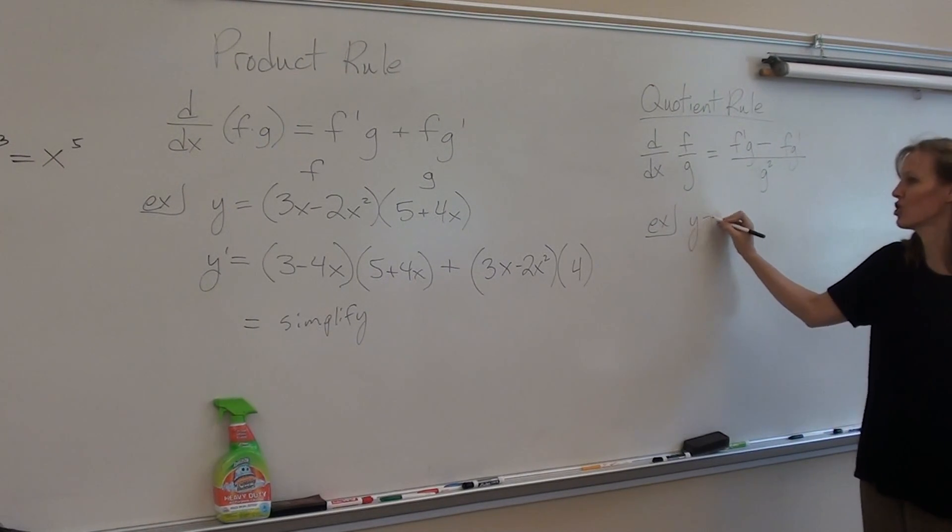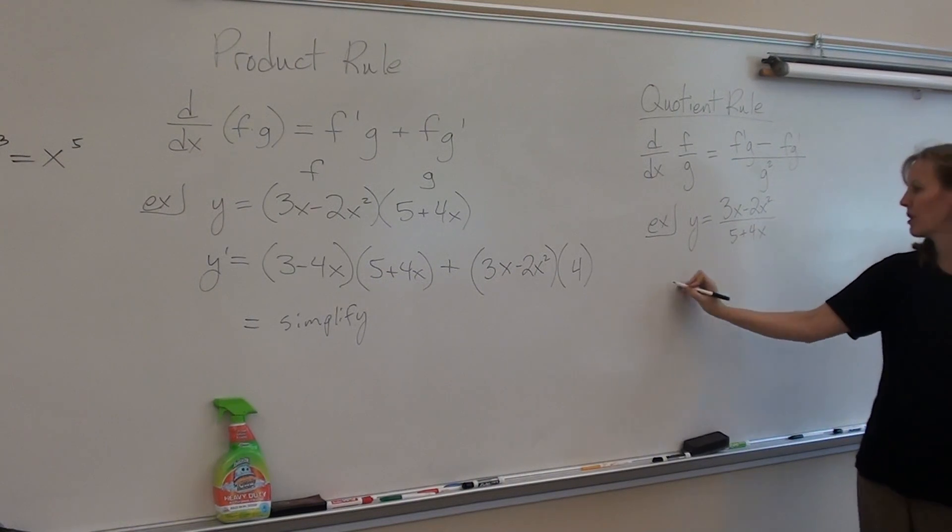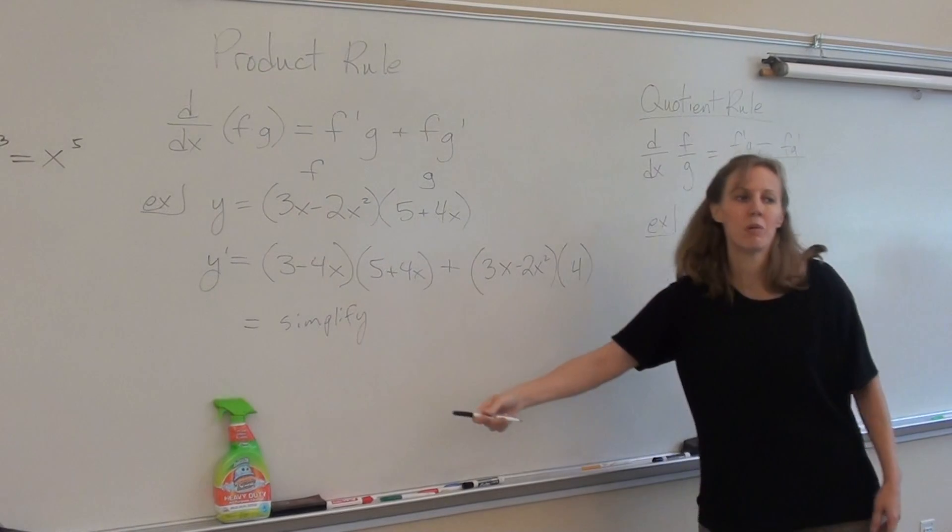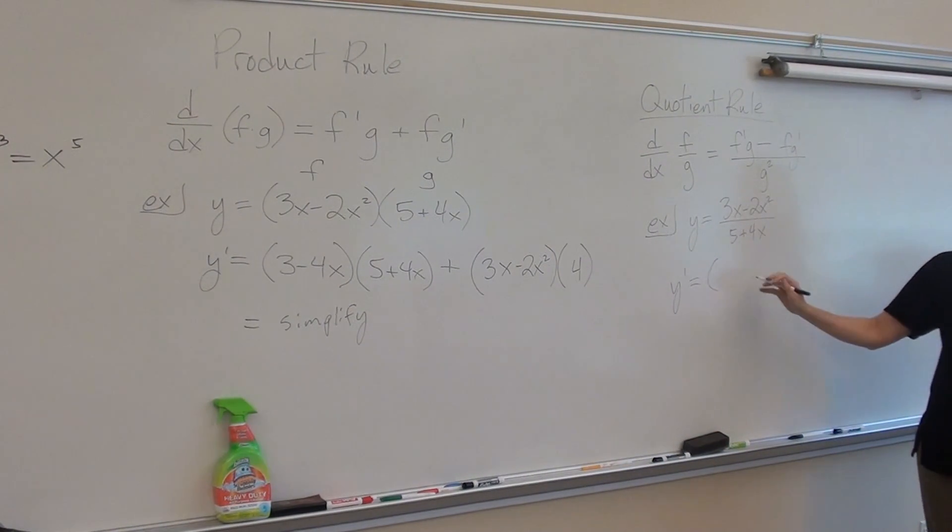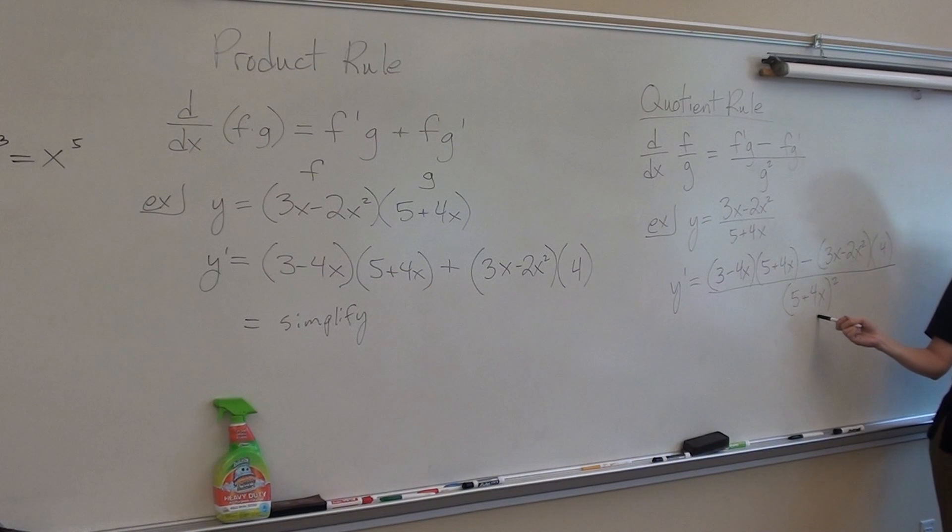Quick example. 3x minus 2x² over 5 plus 4x. So, say we have to find y'. All right. Always start with the derivative of the top. Here you start with the derivative of the first term. Here you start with the derivative of the first term. Okay? So, what's the derivative of the top? 3 minus 4x. Good. Times the bottom. Minus the top. Times what's the derivative of the bottom? All over the bottom squared. Can I cancel these 5 plus 4x's? Can I cancel these? No. No. That would be a great big BA, right? Of course, you would still need to simplify by multiplying all out at the top and combining like terms.